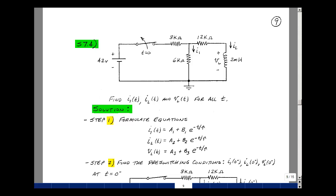Given this one inductor circuit with a single pole, single throw switch, can you find the value of I1, I sub L, and V sub L of T for all T? In the Chapter 7 notes, we had an algorithm for solving one inductor circuits.